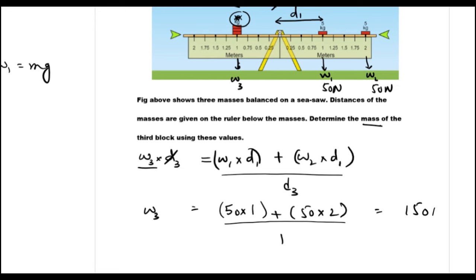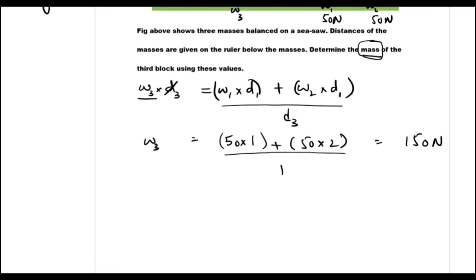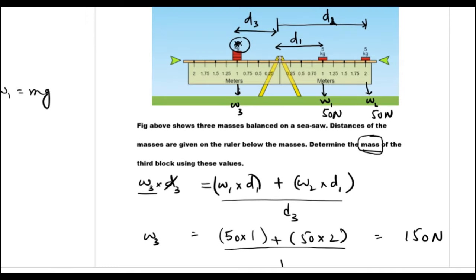We have to find out the mass, not just the weight. So mass equals weight over g: 150 divided by 10 gives us 15 kg. This is the mass of the unknown object, 15 kg. This was related to this experiment. We have seen practice questions and I will add two more questions in the description. See you in the next video.